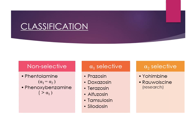With phentolamine, if you increase the concentration of agonist, the blockage will reverse. But phenoxybenzamine is an irreversible blocker, so it will not be reversed. In alpha 1 selective, the names to remember are prazosin, doxazosin, terazosin, alfuzosin, tamsulosin, and silodosin. Tamsulosin and silodosin are important — they are further selective for the alpha 1A subtype. The blood vessels are more alpha 1B, and the bladder and prostate are more alpha 1A. So tamsulosin and silodosin are more selective for alpha 1A. Alpha 2 selective is yohimbine. Rauwolscine is only a research drug and not in clinical use.